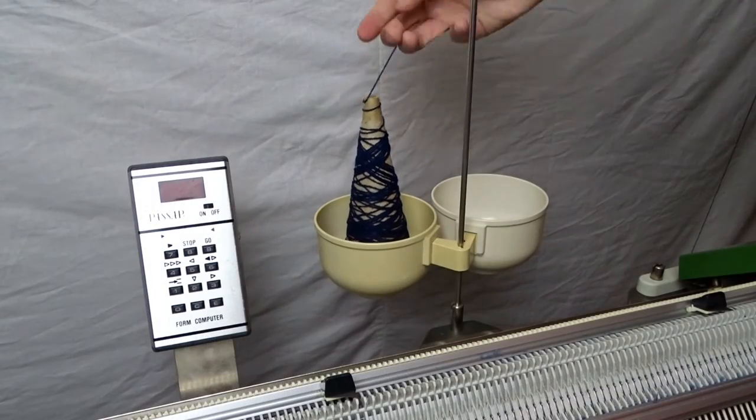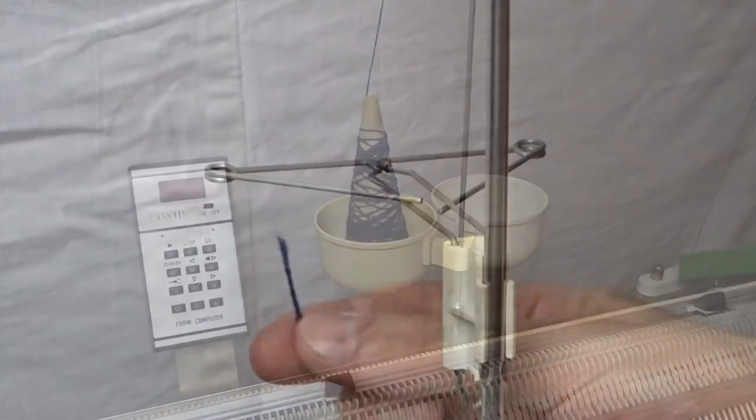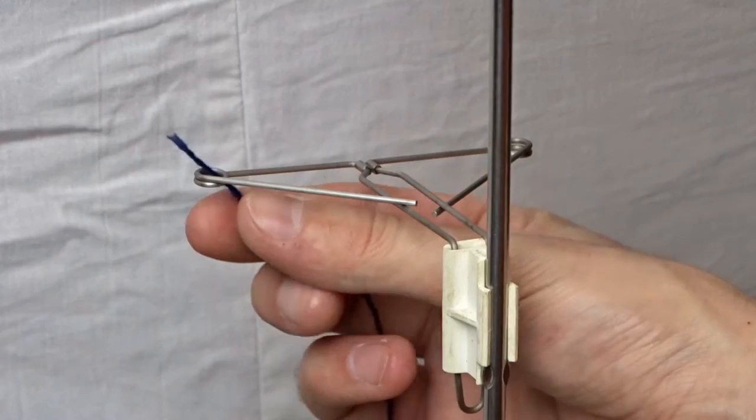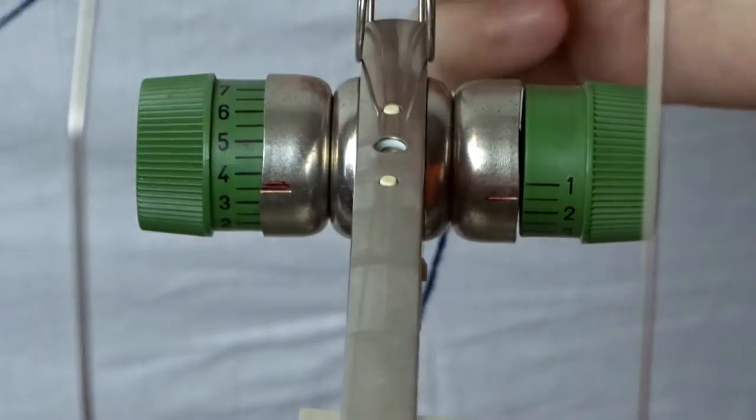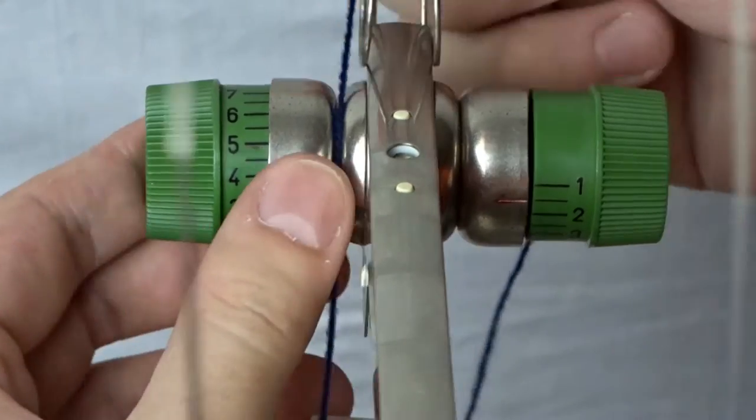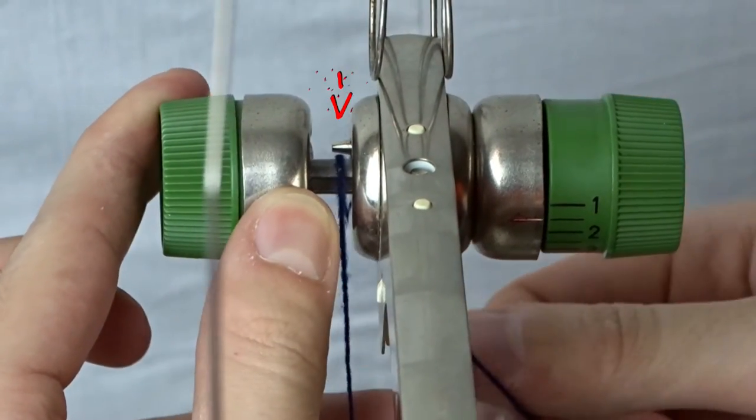Place the yarn bow into the plastic cup. Take the yarn end and pull it through the first eyelet. Then, pass the yarn through the tension discs. The yarn must be under the small pin.